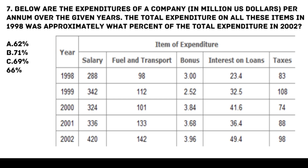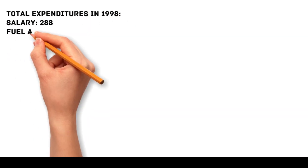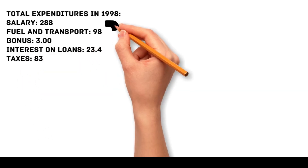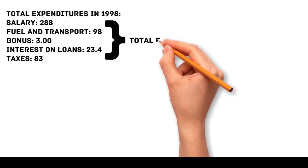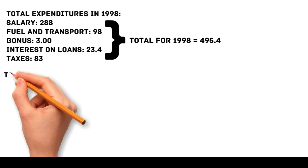To determine the total expenditures for 1998 and 2002, we sum the expenditures for each item. Total expenditures in 1998: salary 288, fuel and transport 98, bonus 3.00, interest on loans 23.4, and taxes 83, which equals 495.4 million.